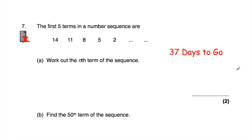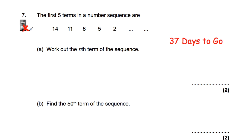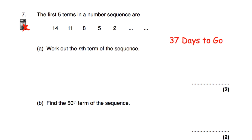Question number seven is on the nth term. We've got the linear sequence 14, 11, 8, 5, 2. Figure out what it's going down by, write the multiples of that number, write that number times n, then figure out what you need to add or subtract to get to the sequence — that gives your nth term. For part B, find the 50th term by substituting 50 into your nth term expression.